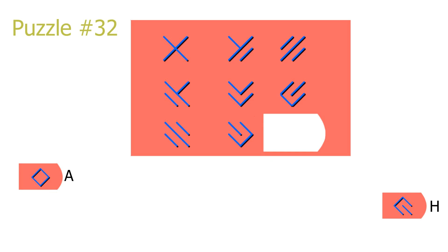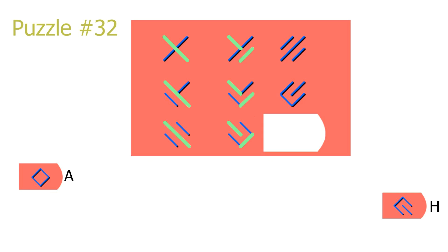Next, let's focus on the columns and more specifically, what stays the same in each column. In the first column, we have this line which stays the same in every picture. In the second column, we have these two lines, and in the third column, we have these two lines, which is the same in the two first pictures. Notice how in the columns, the top left and bottom right line stays the same, while in the rows, the top right and bottom left line stays the same.